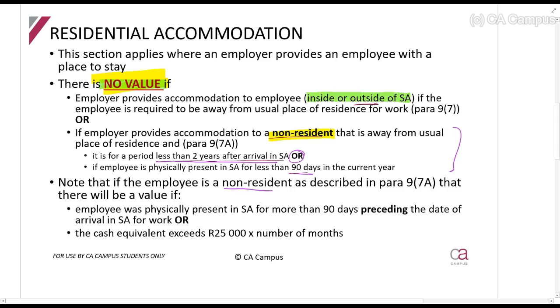I've never really seen them test this, but they say if the employee is a non-resident, there will be a value even if these requirements are met if the following is relevant: if they were previously physically present in South Africa for more than 90 days preceding the date of arrival for work. So if they were already in South Africa for more than three months before you give them a place to stay, they'll be taxed.